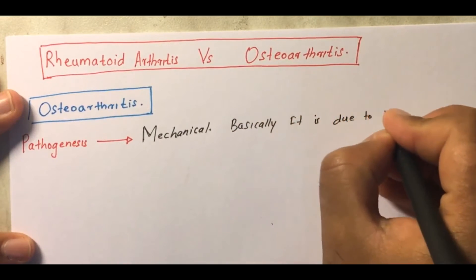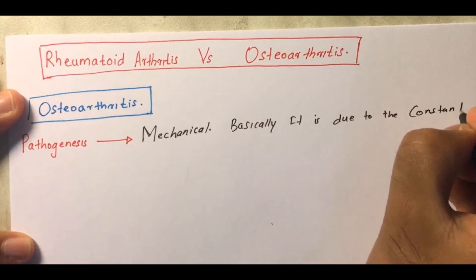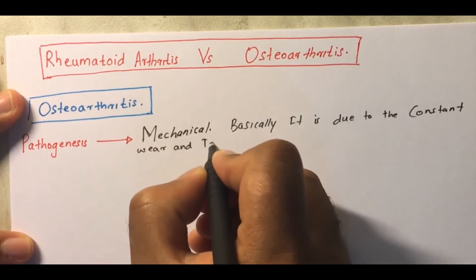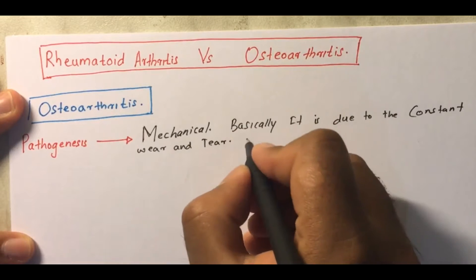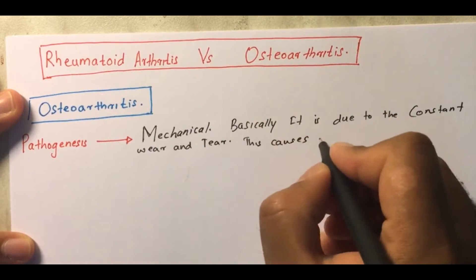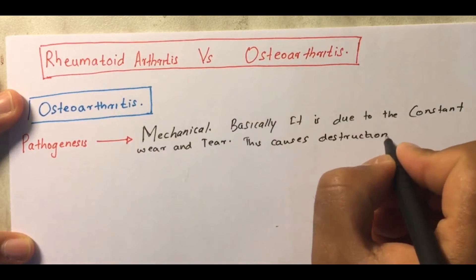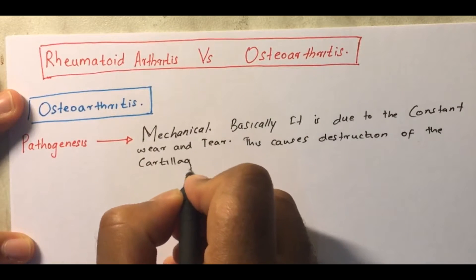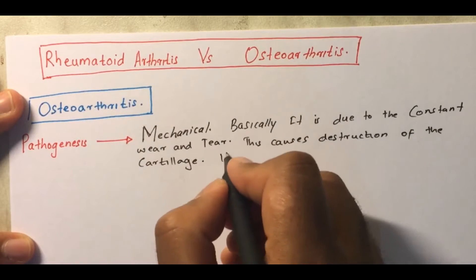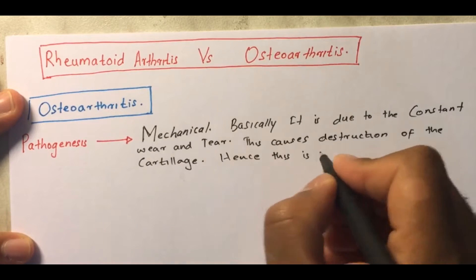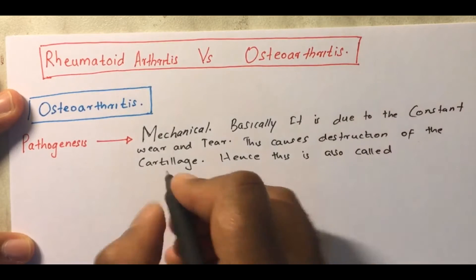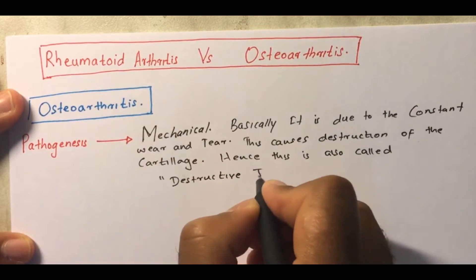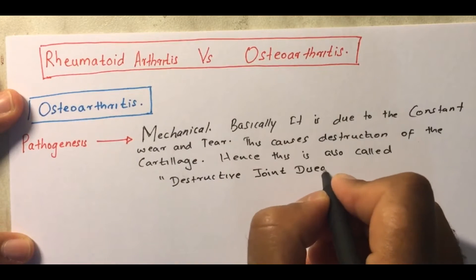It's due to the constant wear and tear produced by the articular surfaces. Normally the articular surfaces are covered by cartilage, but due to erosion caused by this constant wear and tear, the cartilage wears off, causing destruction. That is why this is called a destructive joint disease.